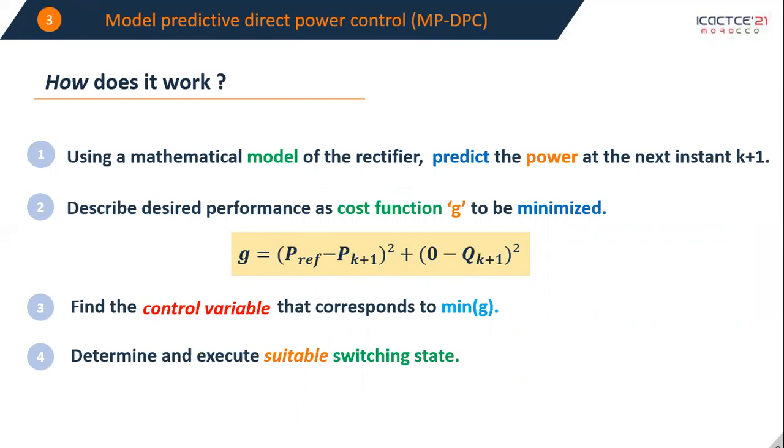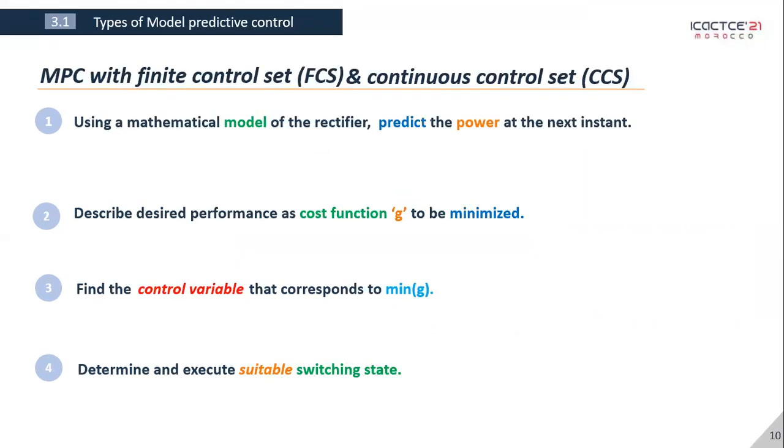Now depending on the control variable we can distinguish two types of model predictive control. The first uses the switching patterns themselves. It is called the finite control set because we can only have eight possible switching patterns.